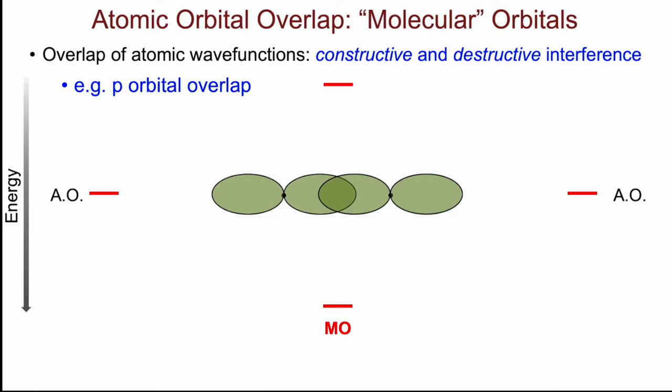In the formation of molecular orbitals, the number of orbitals is conserved, and so if two atomic orbitals come in and overlap, the result will be two molecular orbitals, but they are of different energies.